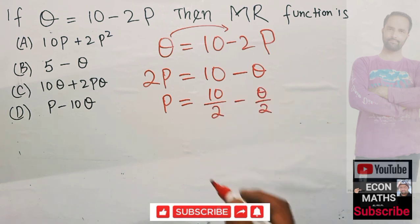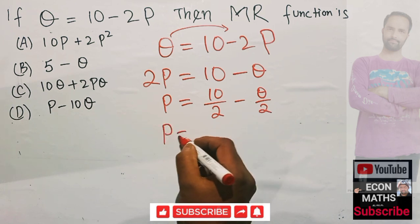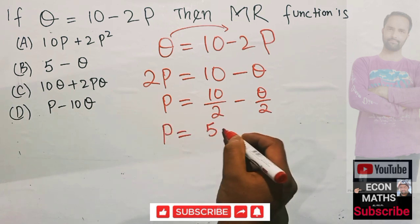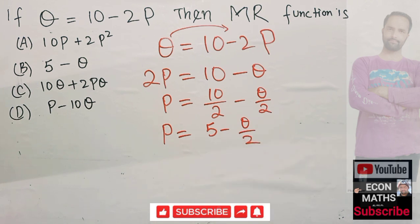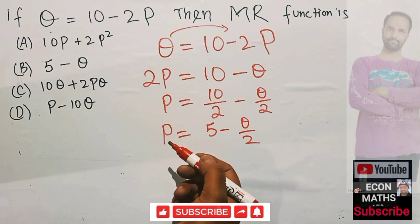upon 2. So P equals 10 upon 2, which is 5, minus Q upon 2. This is our inverse demand function. Now what we need to do is find out the